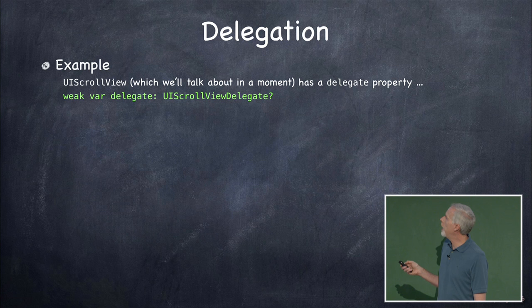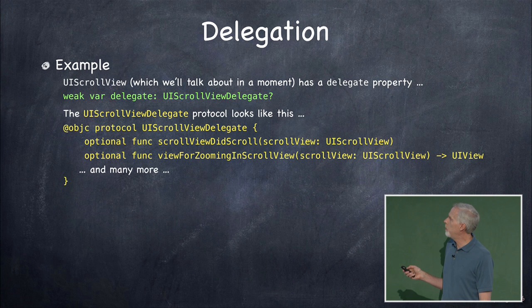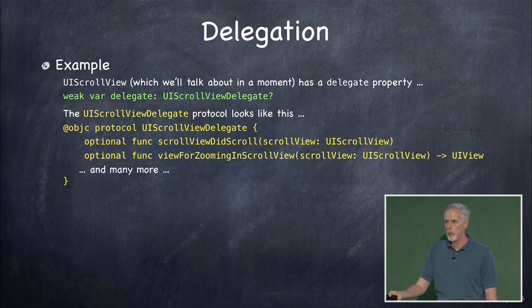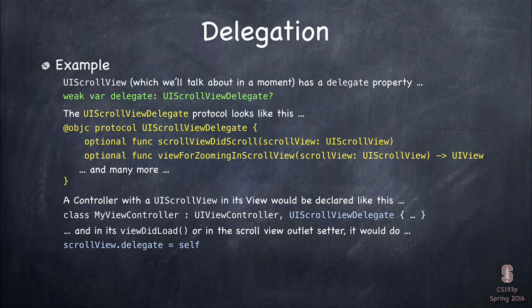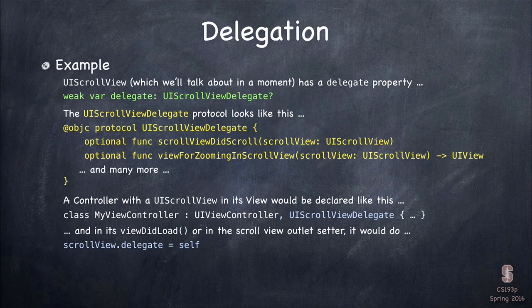UIScrollView is a UIView subclass with a 'weak var delegate: UIScrollViewDelegate?' property. The UIScrollViewDelegate protocol is @objc with over a dozen optional methods — things like 'scrollViewDidScroll', 'viewForZooming(in:)', etc. A controller that wants to work with a scroll view declares itself as conforming to UIScrollViewDelegate, sets 'scrollView.delegate = self' in viewDidLoad, and implements whichever optional methods it needs.